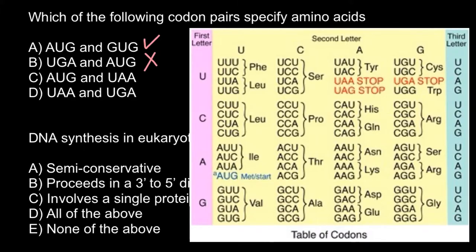And answer C, once again we have start codon AUG and stop codon UAA, so as you see only one amino acid here. And the last one, UAA and UGA. UGA would be a stop codon and UAA also stop codon. So as you see the correct answer is only answer A.